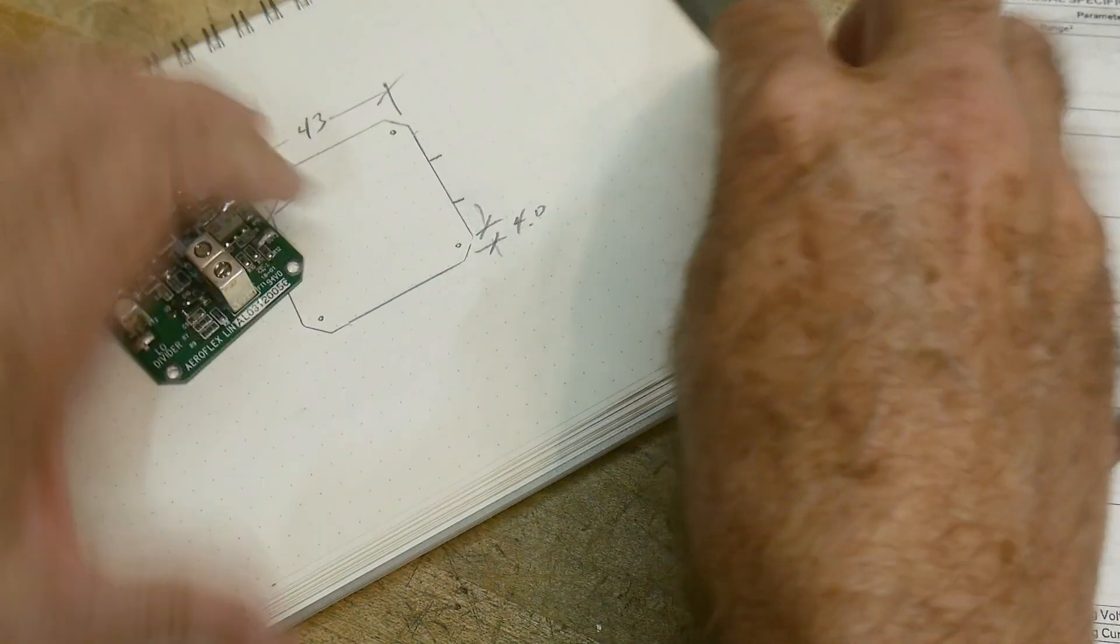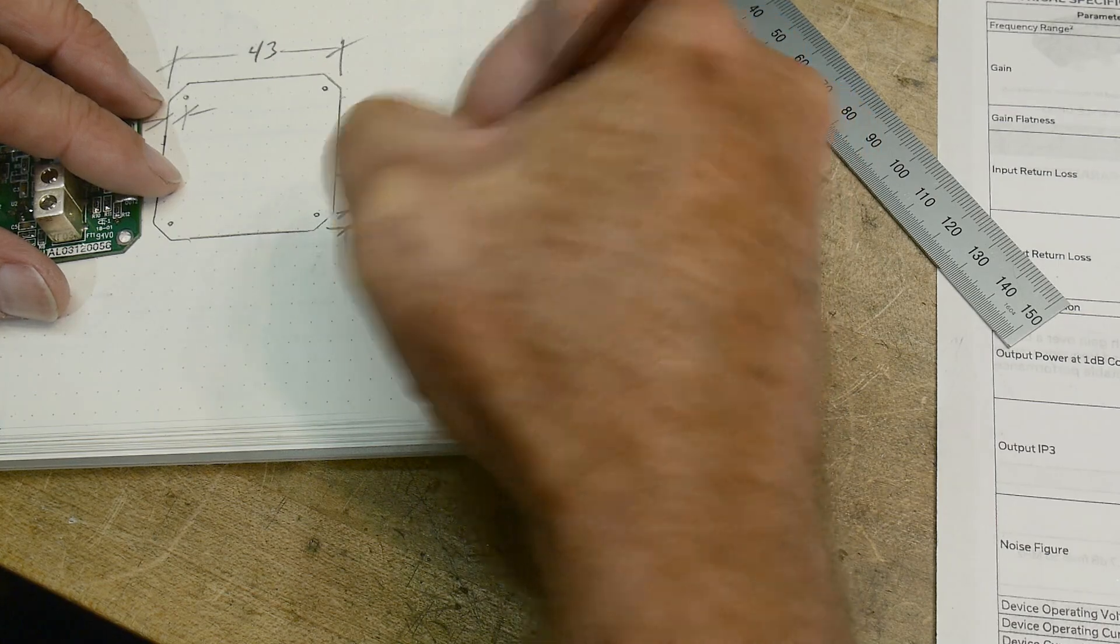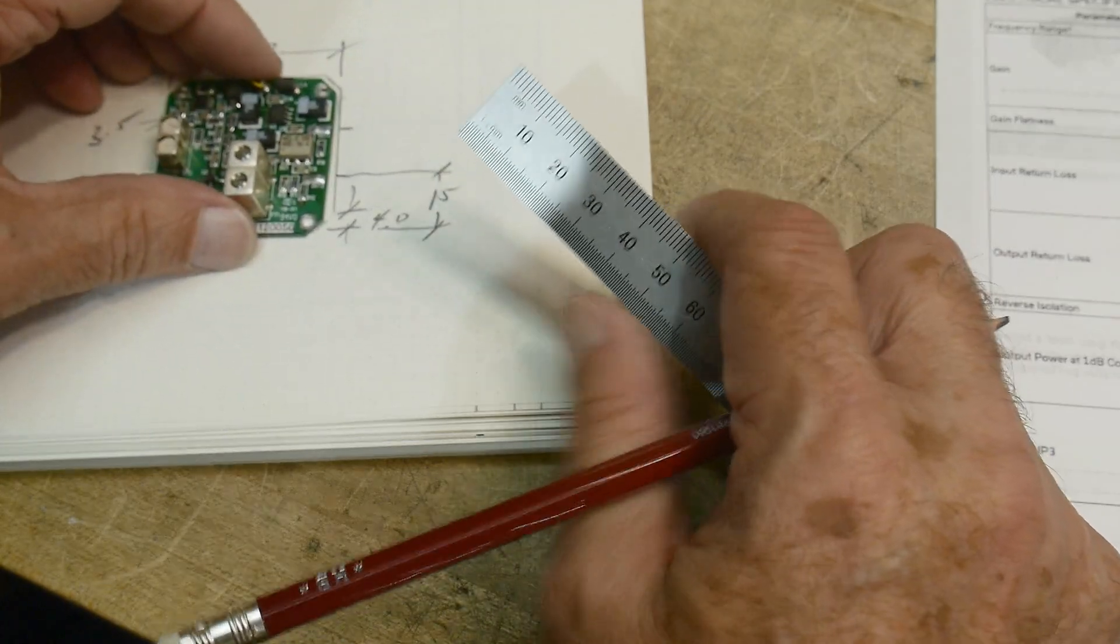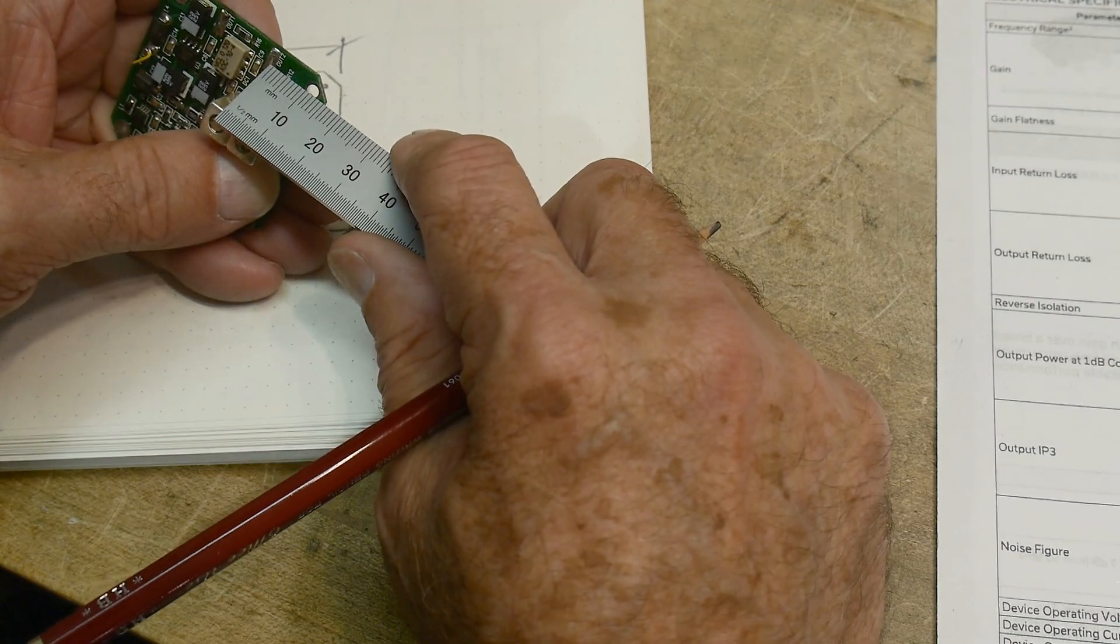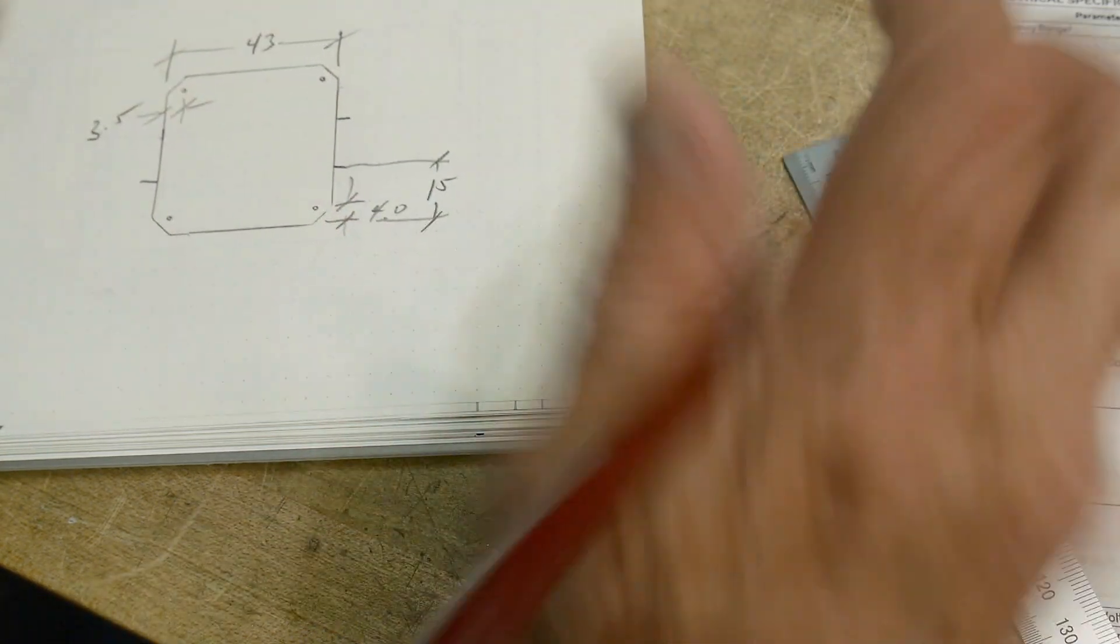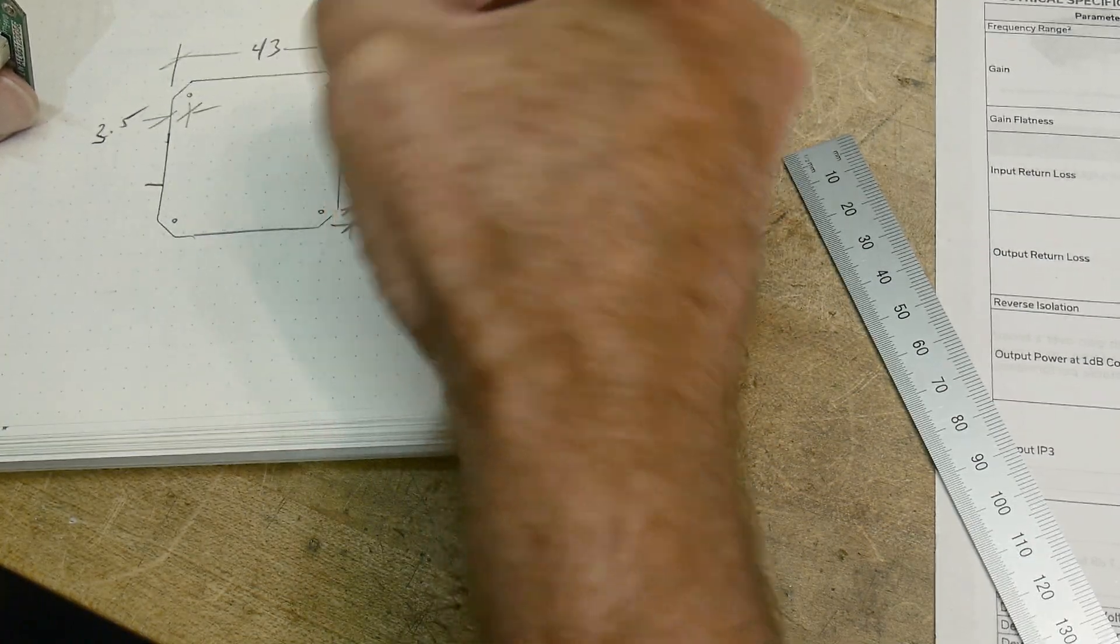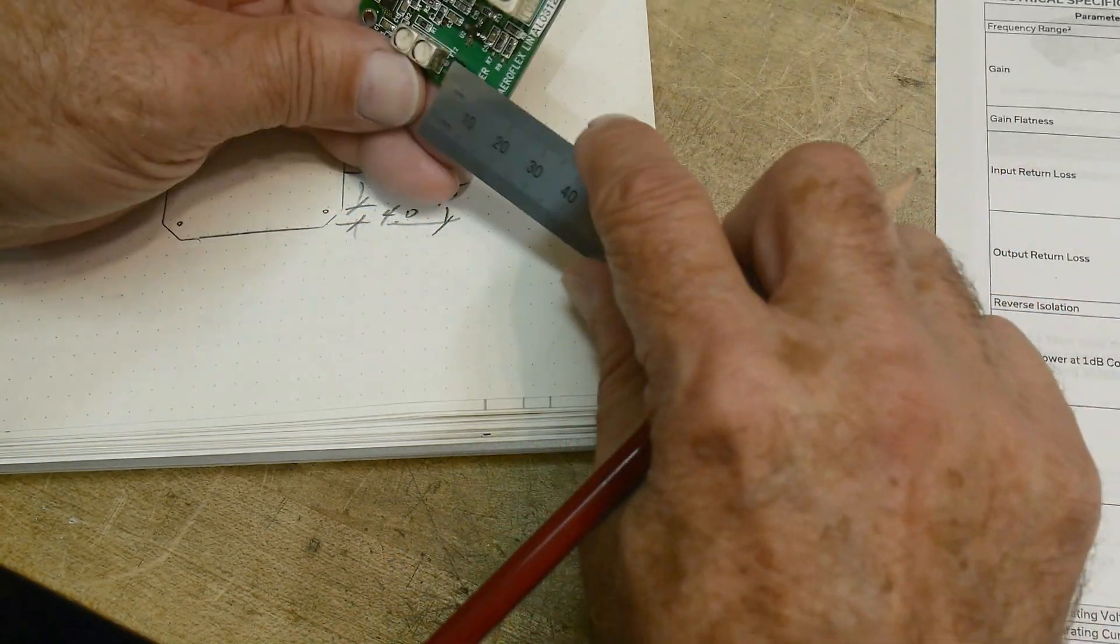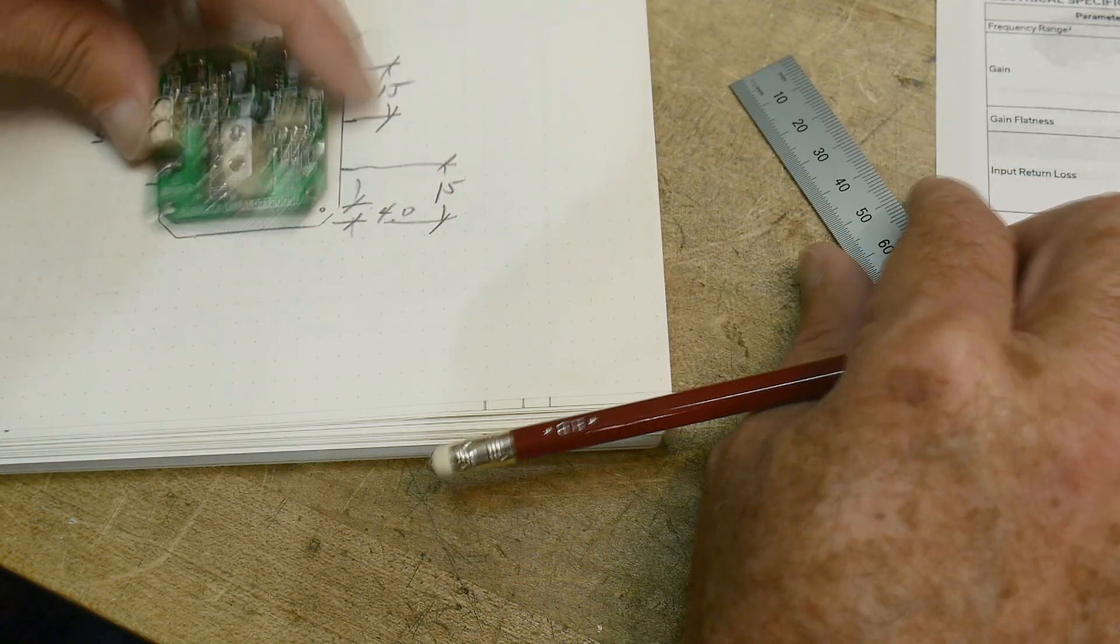First one looks like 15. And the next one from the top of the board is also 15. Okay, so that makes sense. Okay, so 15 and 15 is on that side. And over here we also have 15. All right.